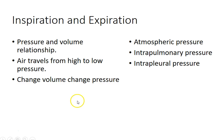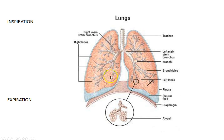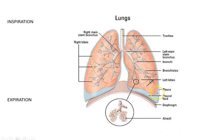The third pressure is intrapleural pressure. The pleural membranes consist of the parietal pleura, which is attached to the thoracic wall, and the visceral pleura, which is the pleural membrane attached to the lungs themselves. Between them is the pleural cavity, which contains pleural fluid. We'll talk about how that keeps air in the lungs.